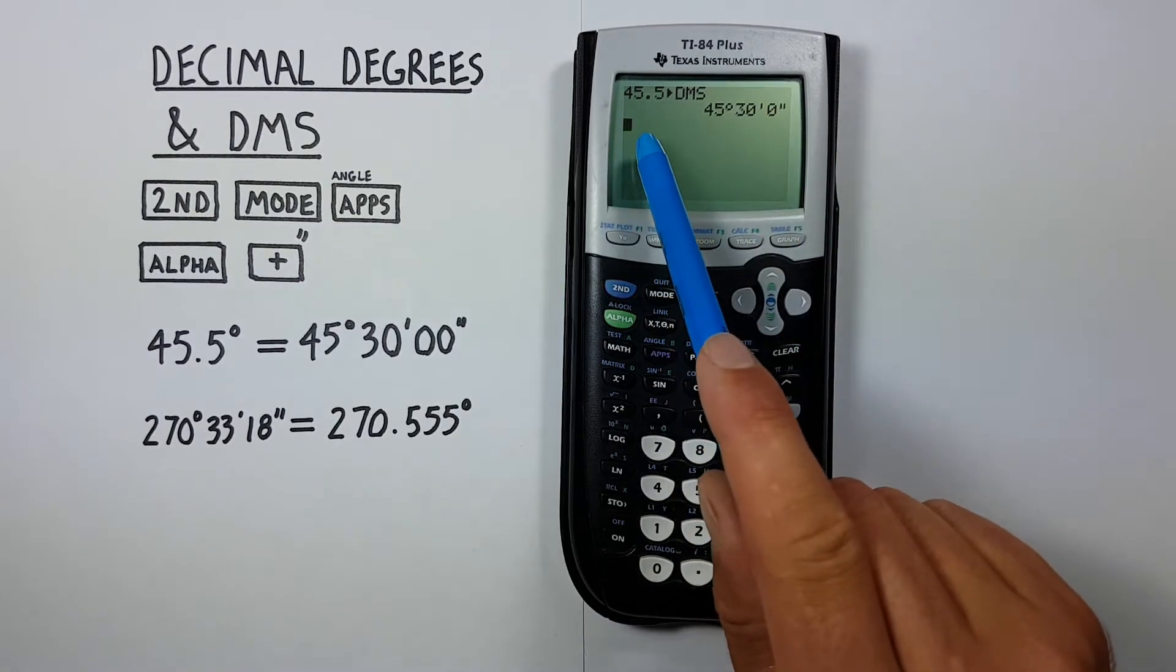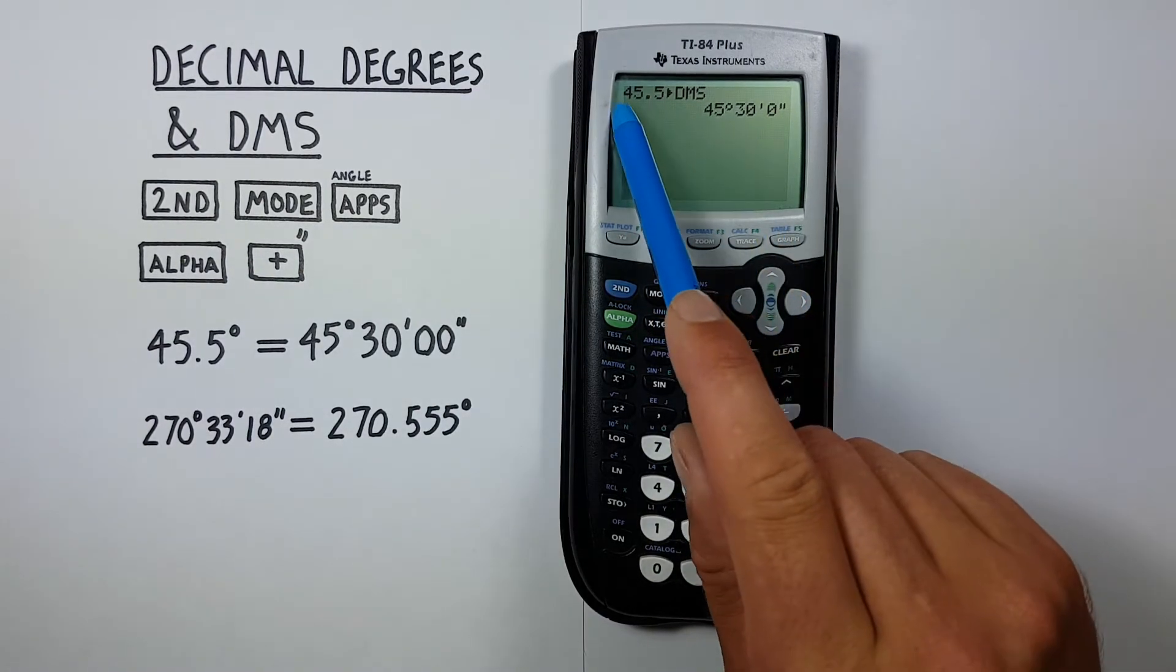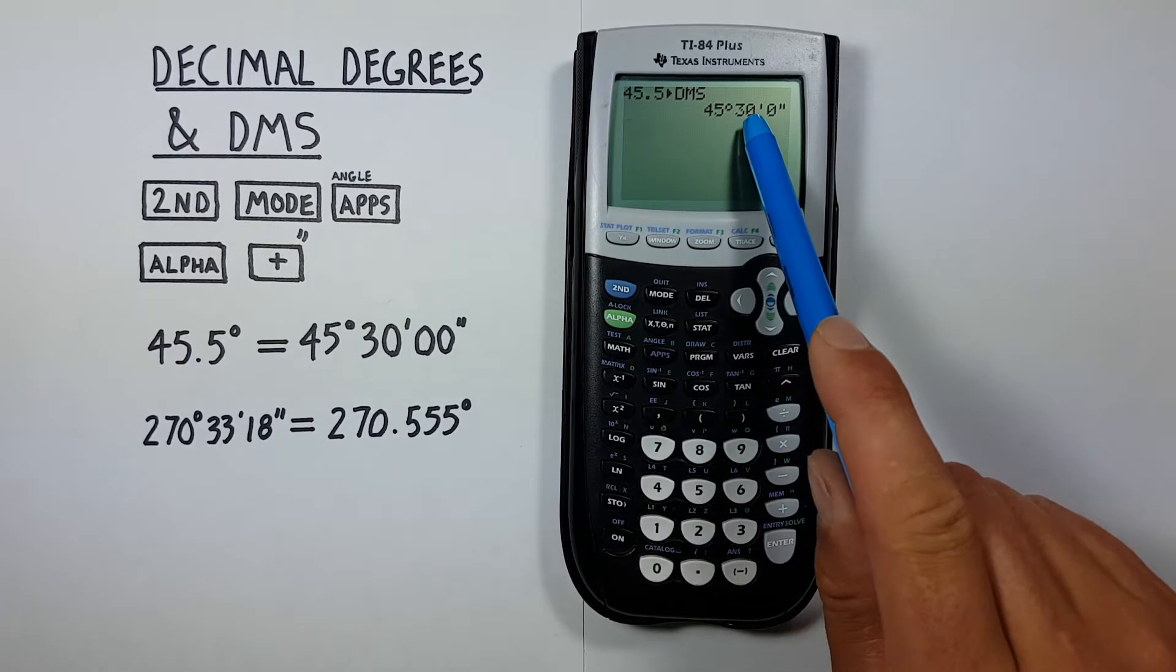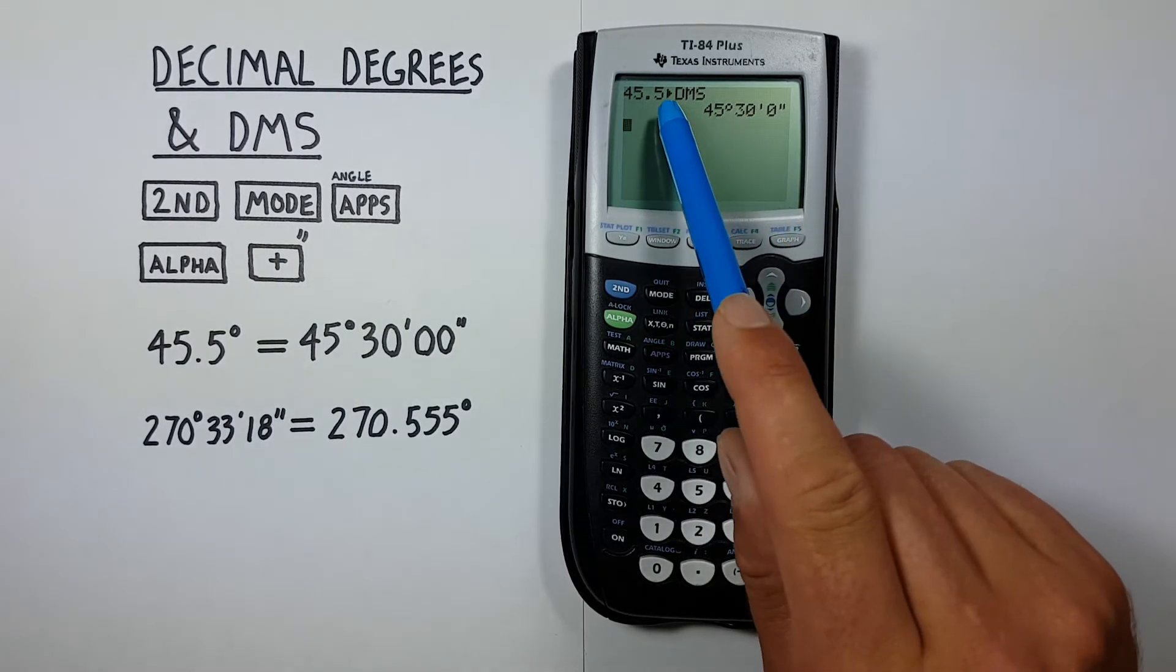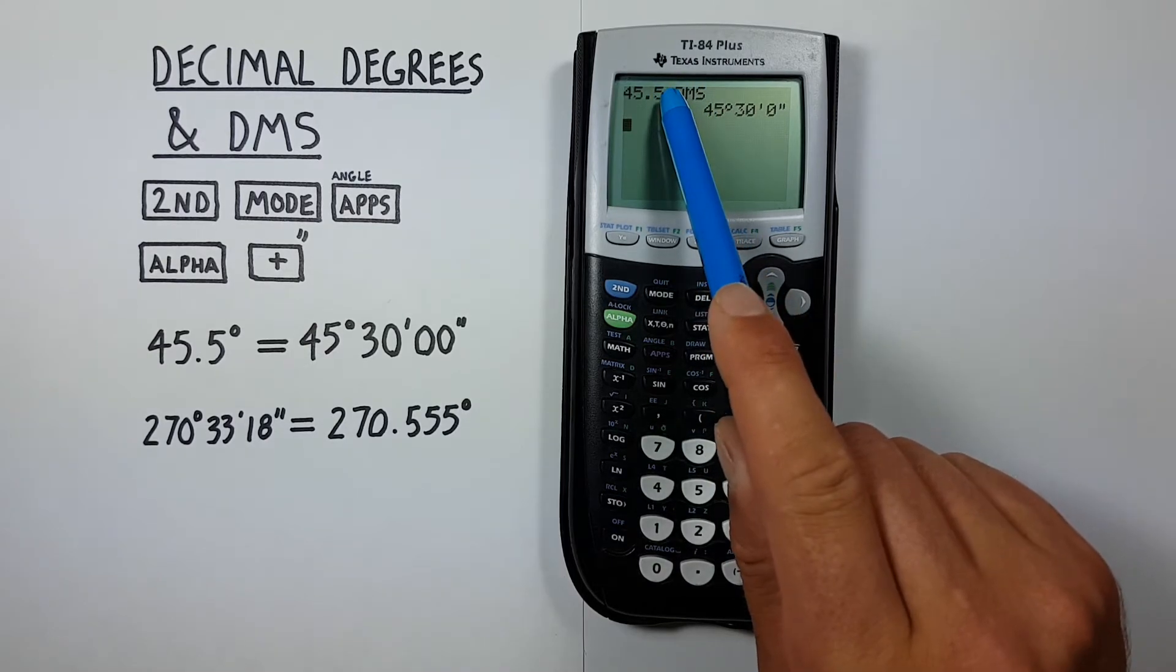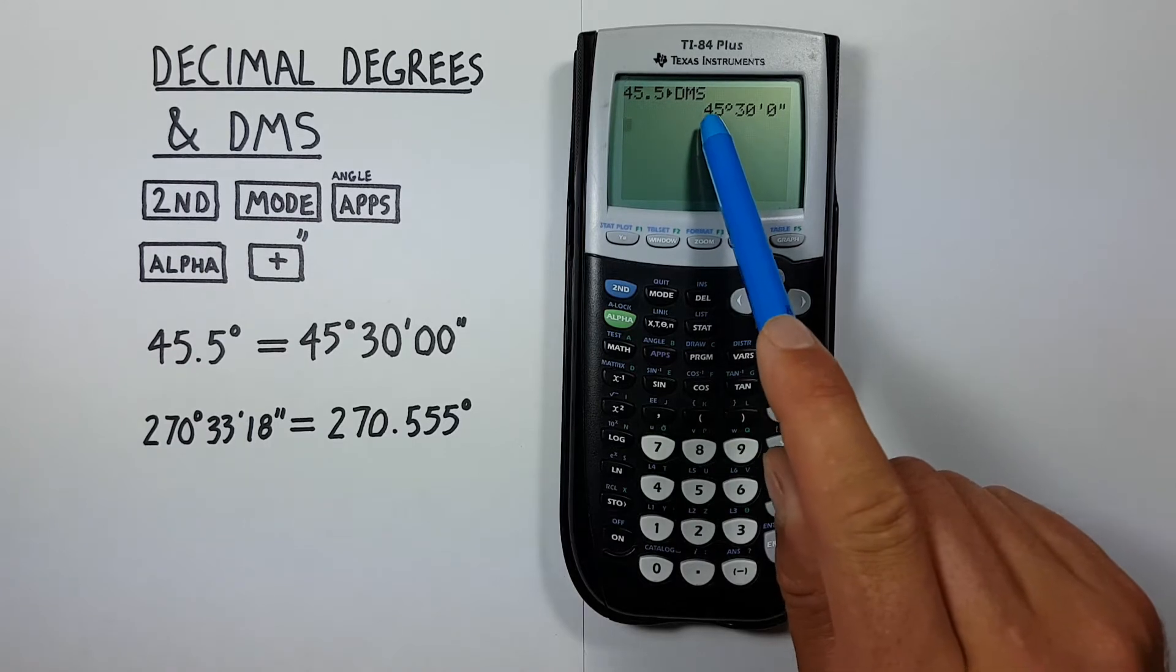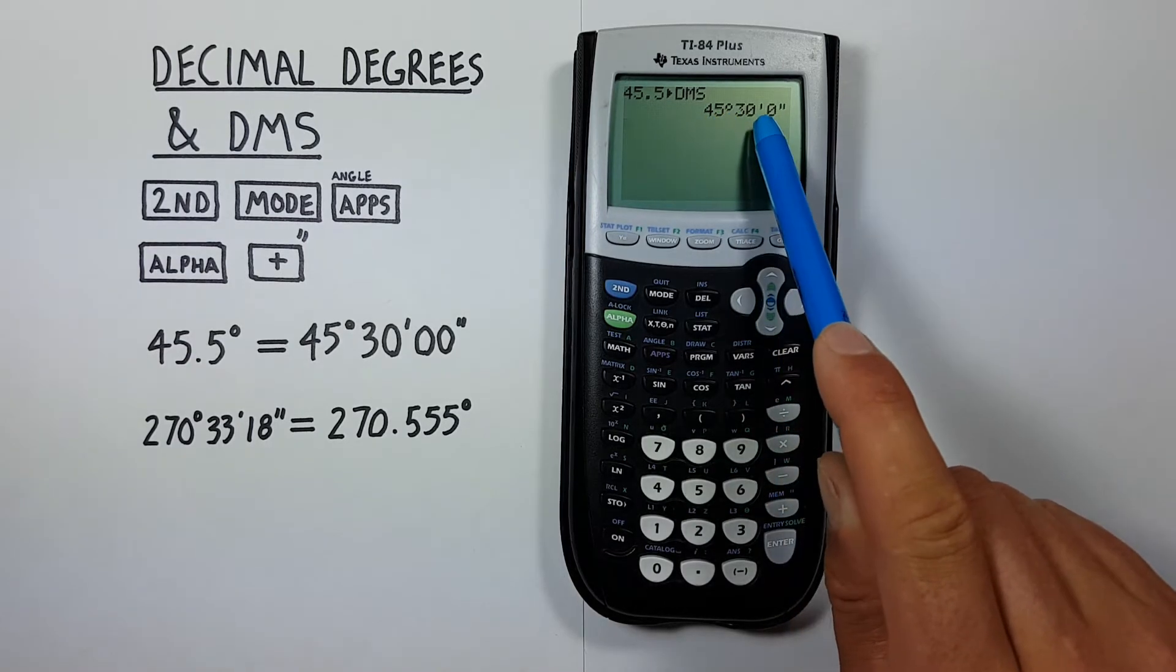It's important to note this also works for time. If we had 45.5 hours and wanted that in hours and minutes, well, just replace the degrees with hours and it works. 45.5 hours is the same as 45 hours, 30 minutes.